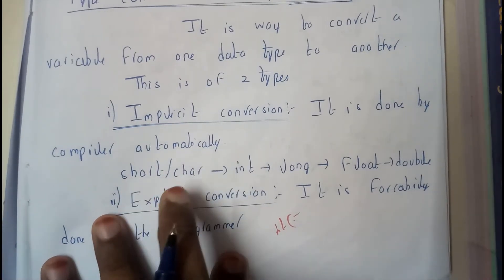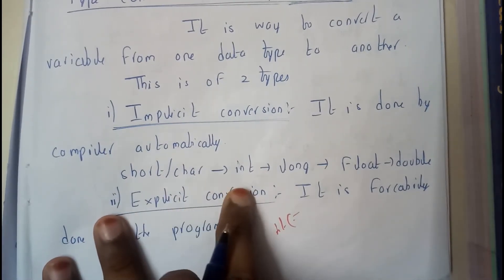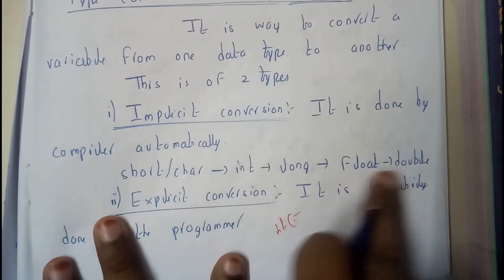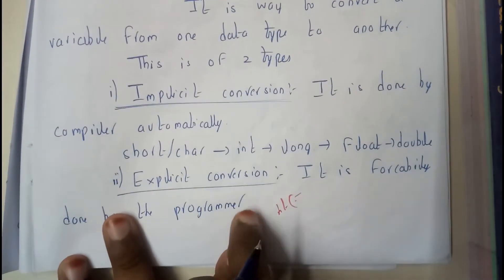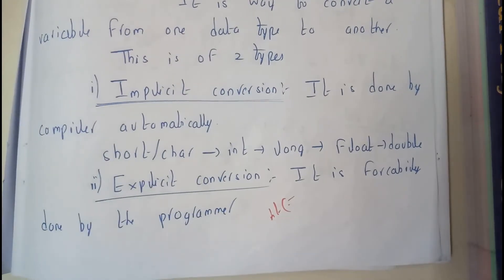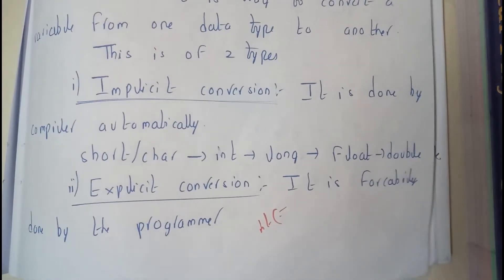So implicit conversion may be from short or character to integer, integer to long and long to float and float to double. Where the opposite direction is not possible implicitly. It can be possible only if you do it forcibly. That is explicit conversion.